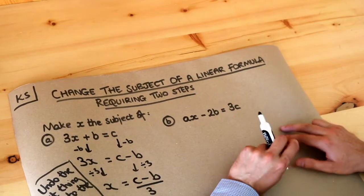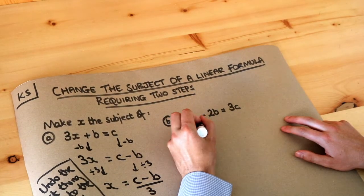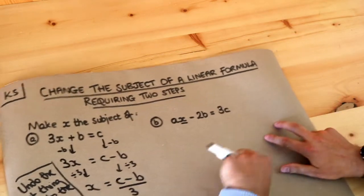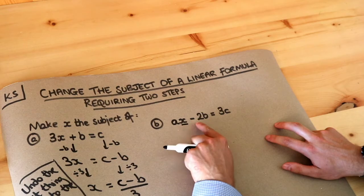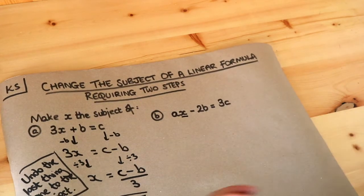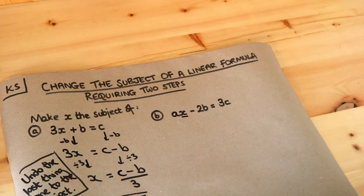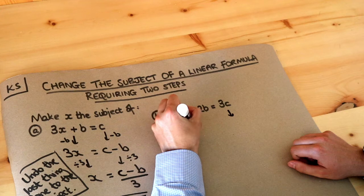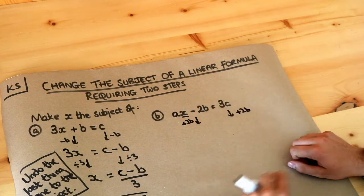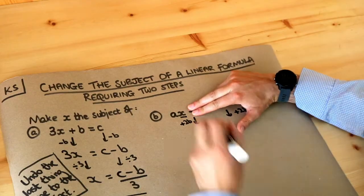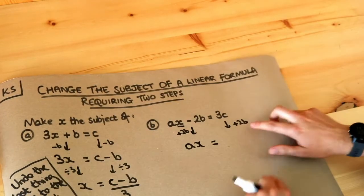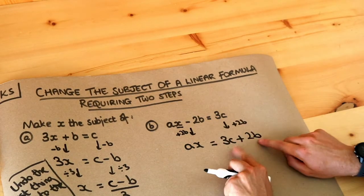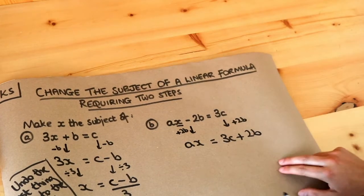What about this second one? We're going to make x the subject. Let's think about what's happening to x and then undo the last thing done to x. Well x was multiplied by a, then we subtracted 2b. So the last thing we did to x was to subtract 2b. To undo that we do the opposite, which is to add 2b to each side of the equation. The add 2b gets rid of that minus 2b leaving just ax, and on the right hand side we get 3c plus 2b — these are not like terms so we can't collect them together.